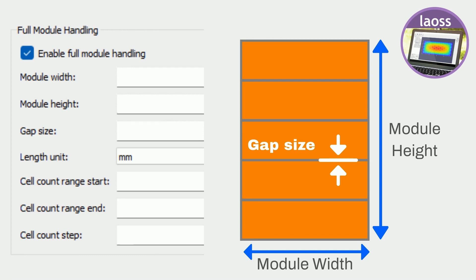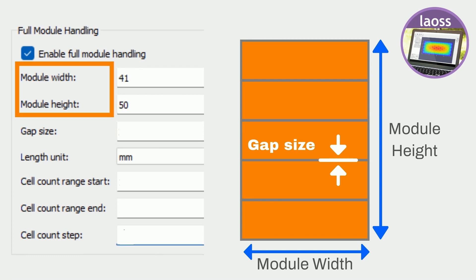We define the sub-cell area using the module's dimensions, gap size, and cell count. It's worth noting that the simulation assumes the sub-cells have lossless interconnections, which might overestimate the photovoltaic key figures like current and voltage.